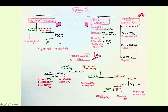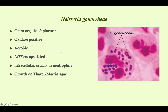Here's our algorithm. We're at the gram-negative diplococci branch, and there are three organisms there. Neisseria gonorrhea is essentially the same as Neisseria meningitis: gram-negative diplococci, oxidase positive, aerobic, and intracellular — usually found in neutrophils. But the big thing that separates Neisseria gonorrhea is that it is not encapsulated, whereas Neisseria meningitis is encapsulated. That distinction is important.